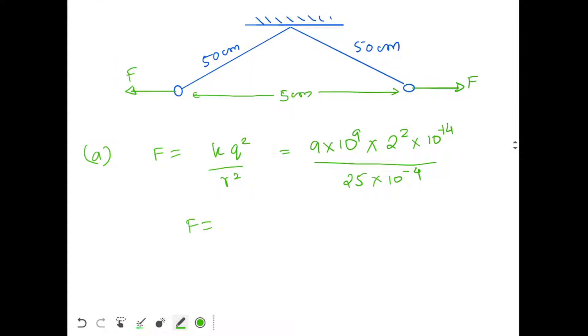So F will be equal to 9 into 4 by 25 into 10^9 times 10^-14 times 10^-1. This will be equal to 0.144 Newton.